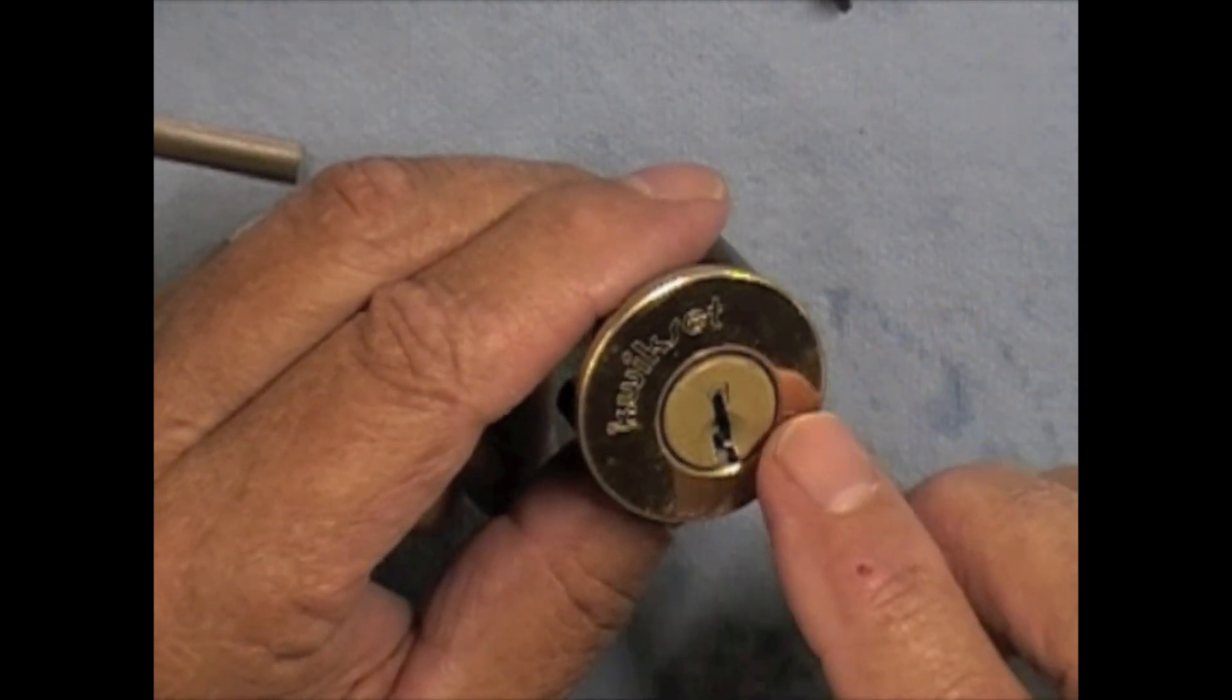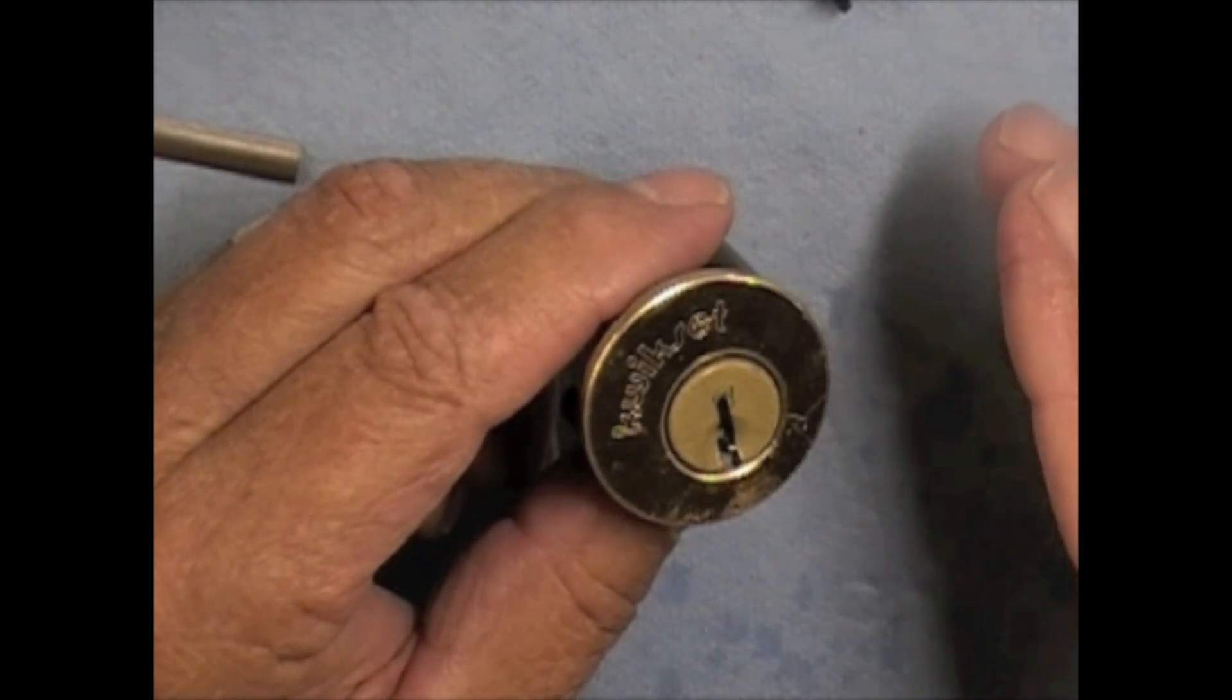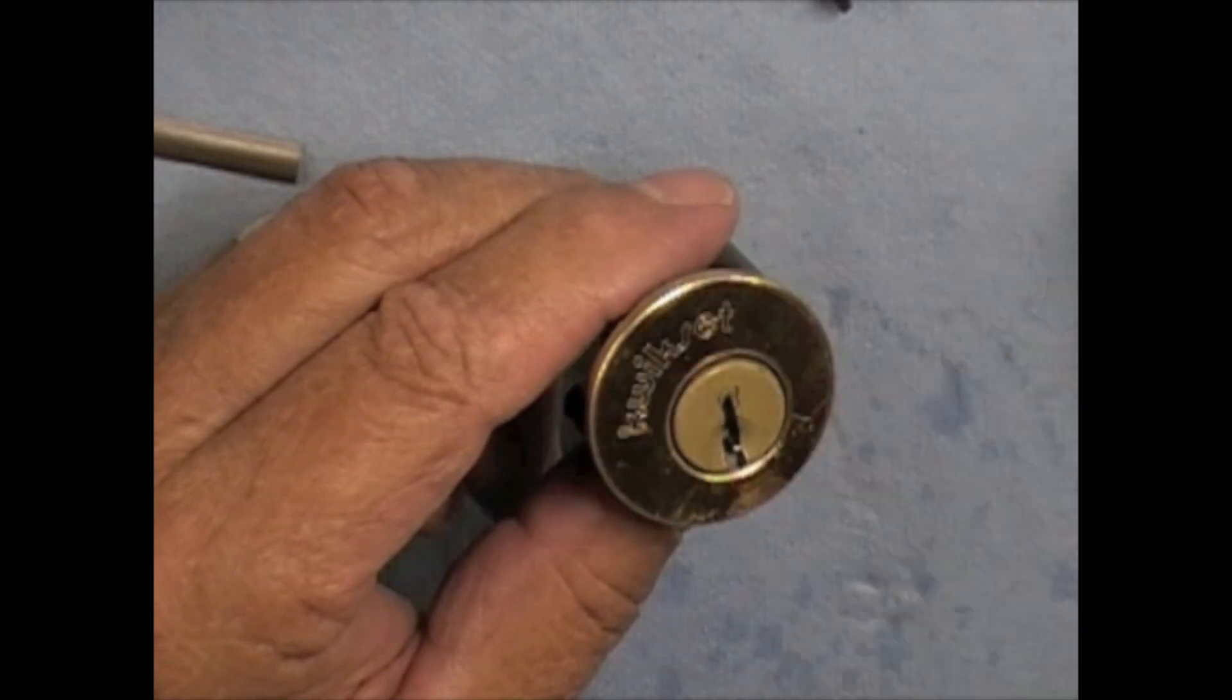Do not drop the pins. If you drop the pins, you're not going to know which order they went in. You're going to have to go to a different lock on that building that uses the same key and start over.